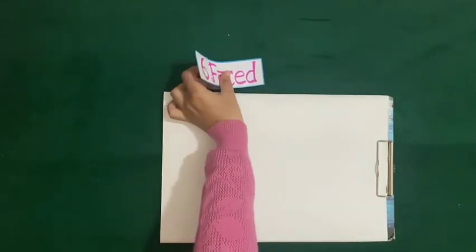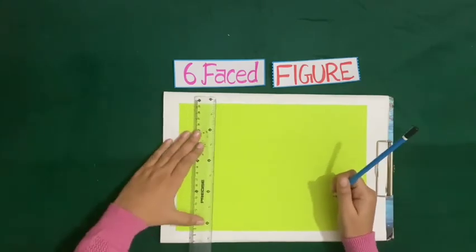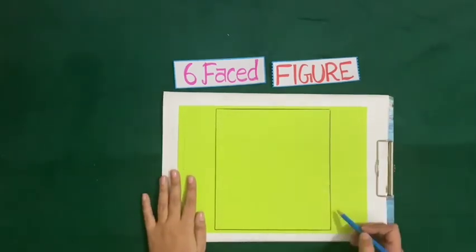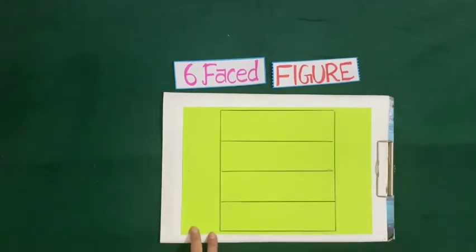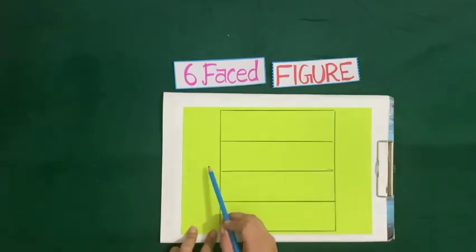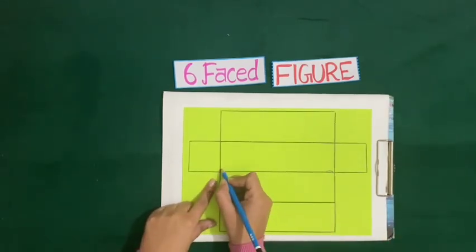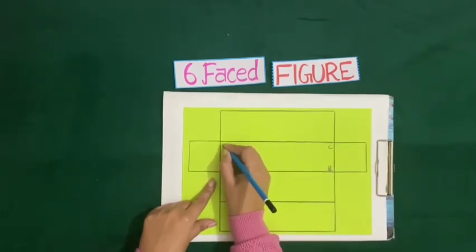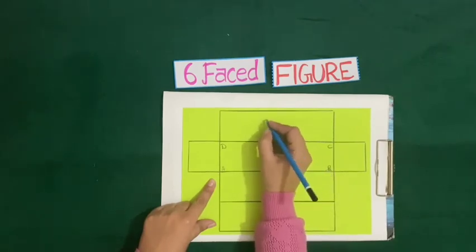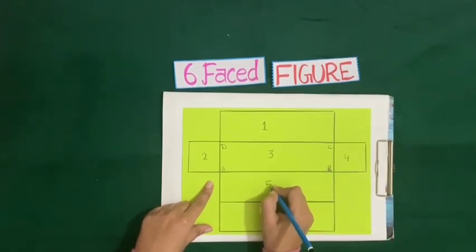Now we will make a six-faced figure. Again for this we will take a paper and draw a diagram with help of pencil and scale. Now we have drawn a rectangle on this paper. Now we will divide this rectangle into four equal rectangles, and we will draw squares on both sides of the second rectangle. Now name the sides of rectangle A, B, C and D. Now let us count the parts of the diagram: one, two, three, four, five and six.